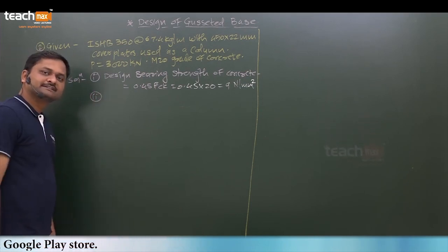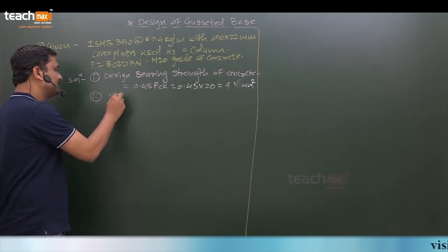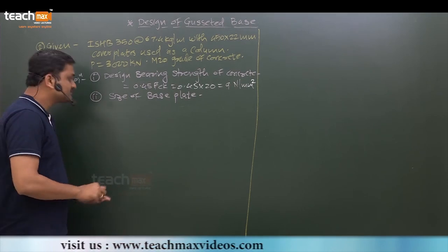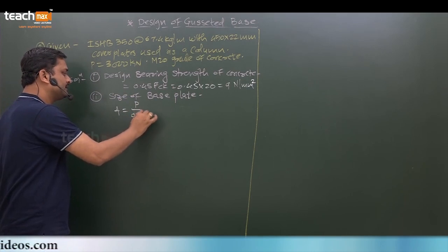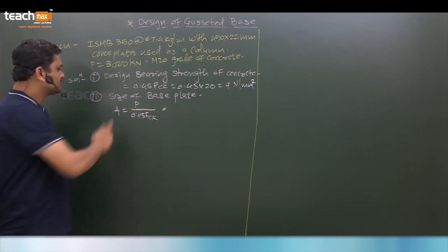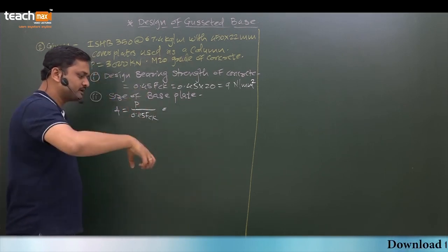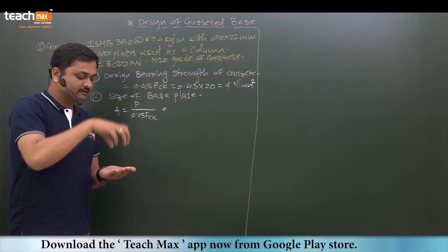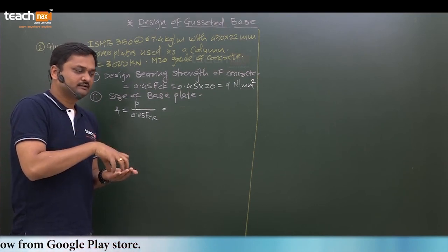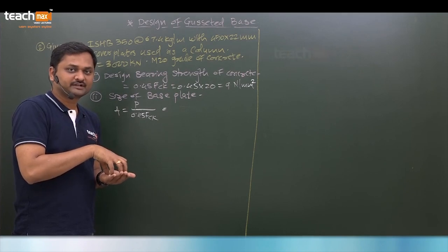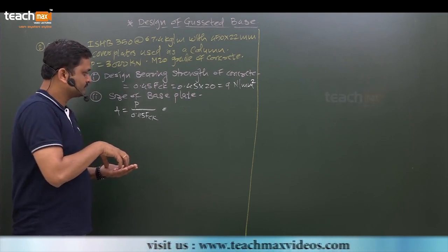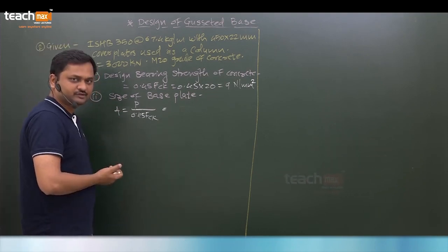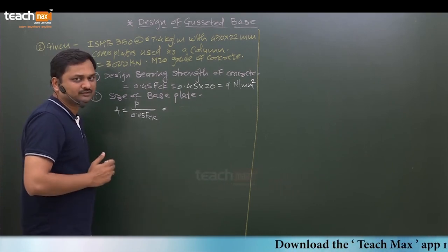After this, we go with the second step: selection of size of the base plate. Same procedure like slab base, no change up to this. Area required equals P upon bearing strength of the concrete. Area equals force upon stress. The compression acting over the column is transferred into the base plate. When any member is subjected to axial forces, area equals force upon stress, or stress equals force upon area.